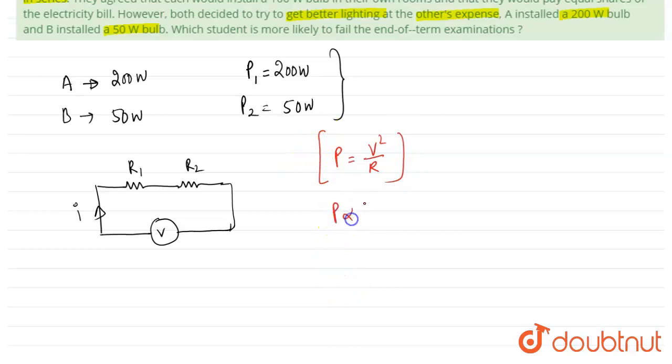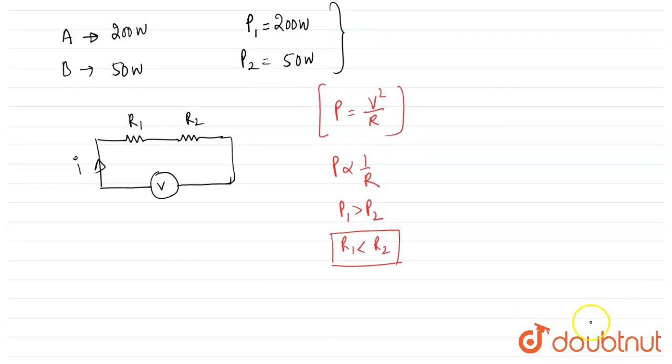And for given relation, the power is constant, so power is inversely proportional to resistance. According to question, P1 is greater than P2, so R1, resistance of bulb A, is less than resistance of bulb B.